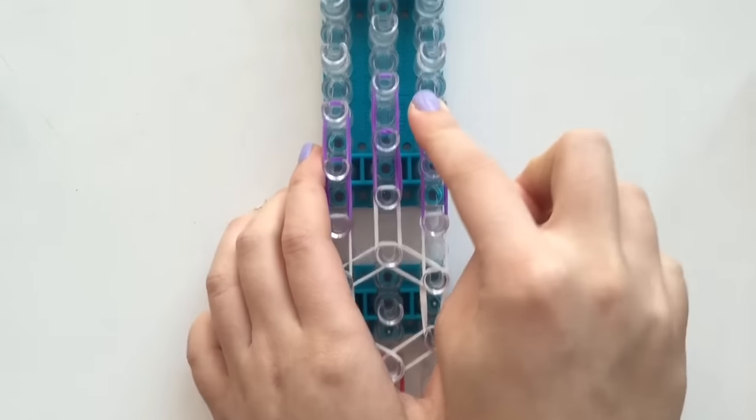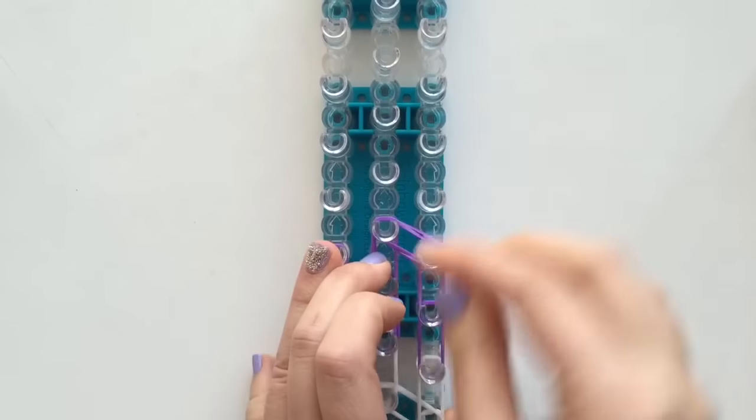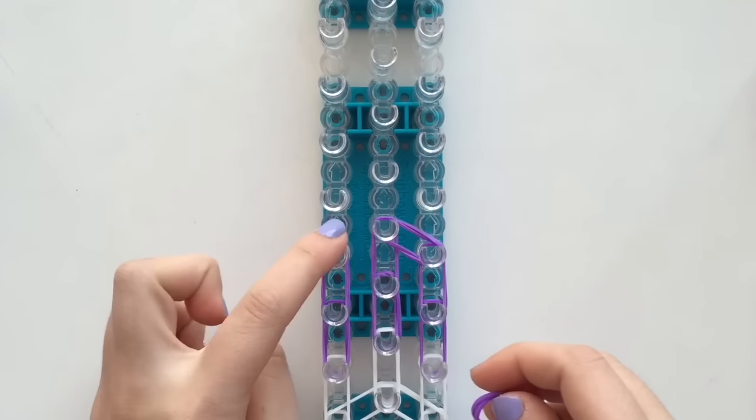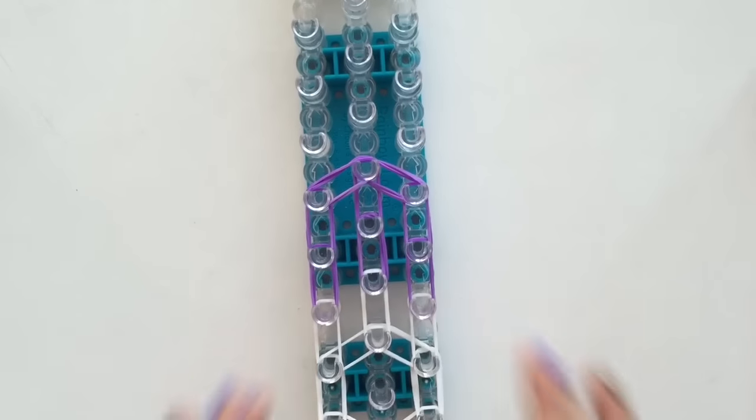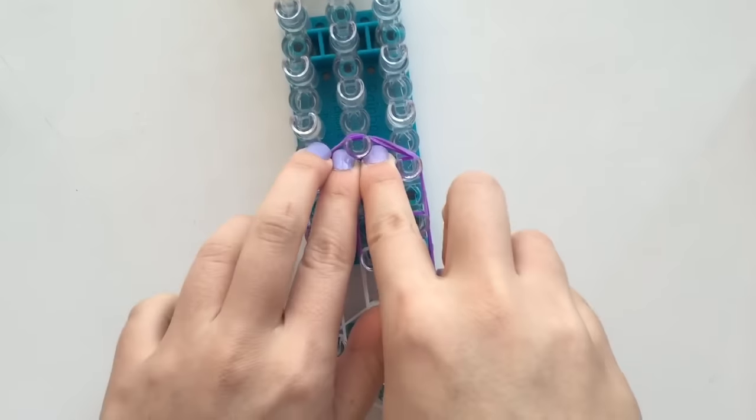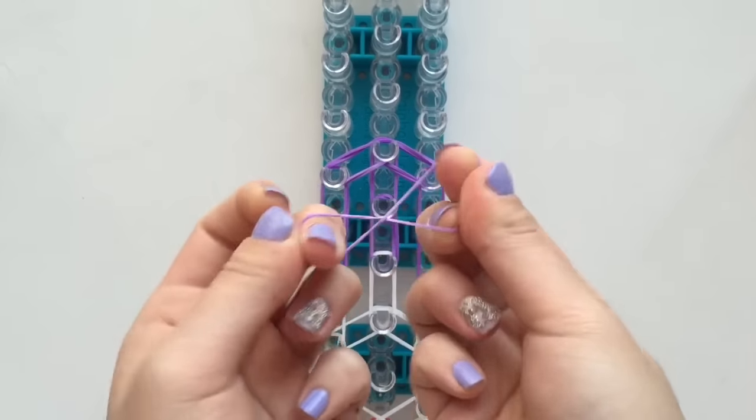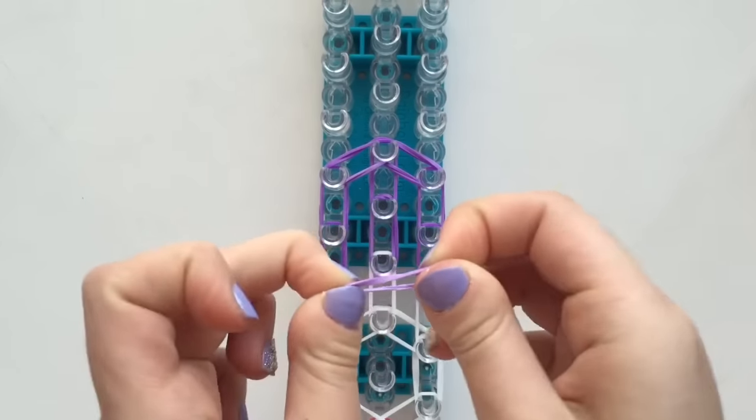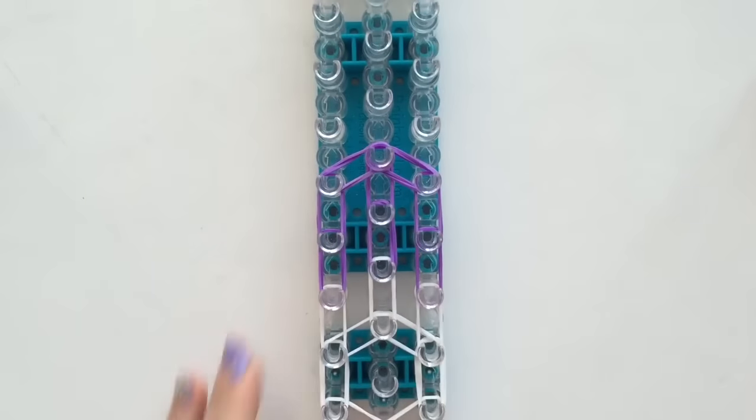Now I'm going to be connecting all of them. So going from the right to the center, reminder, using two bands at a time for all of this, and going from the left to the center so that they're connected. Now take one single rubber band of your base color and I'm going to be placing the cap band. So just twist it twice and place it on that center peg there. Really easy.